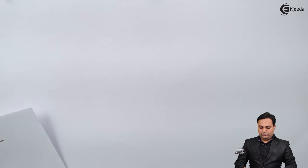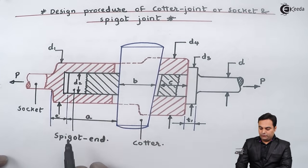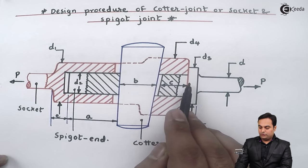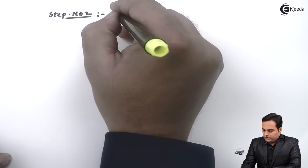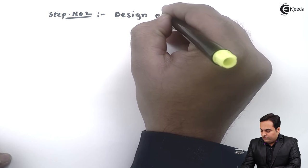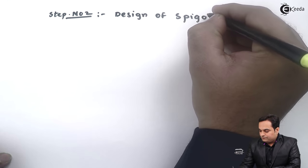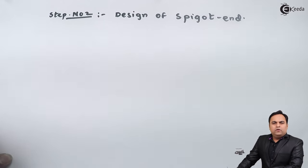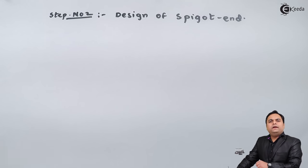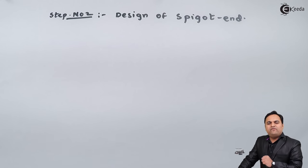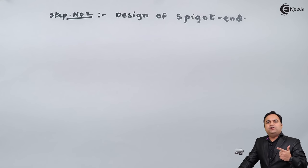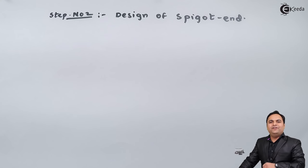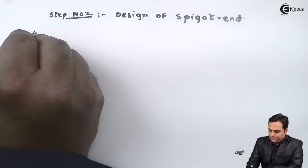After designing the rod, now I will design the spigot end, shown here in black. Step number two is design of spigot. The spigot end may fail under three conditions: first is tension, second is shear, and third is crushing. I'll explain them one by one.